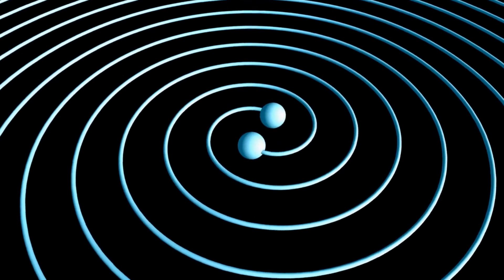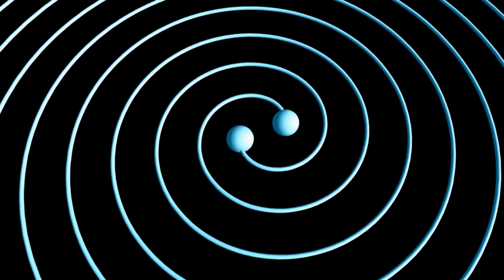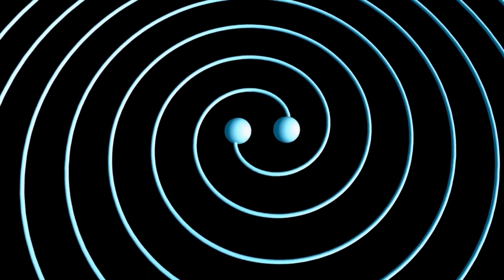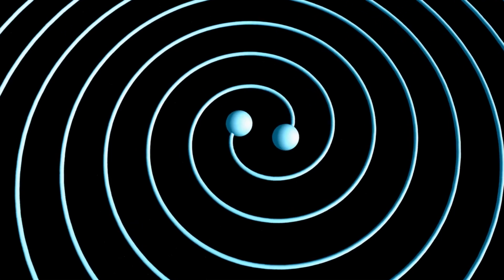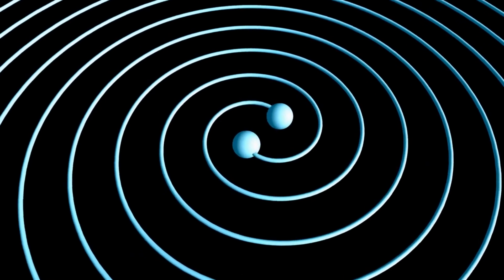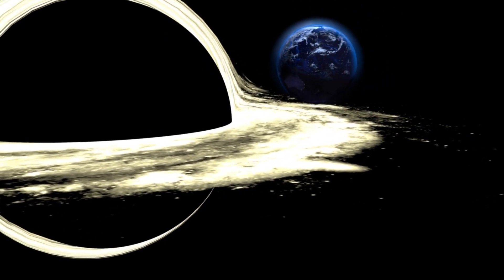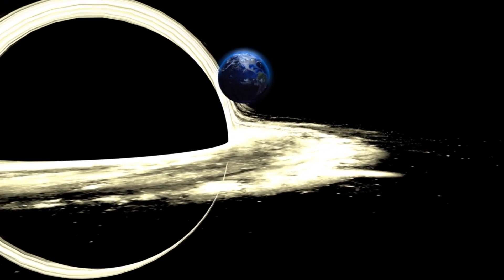On September 14, 2015, the Twin Laser Interferometer Gravitational Wave Observatory detectors, located in Louisiana and Washington in the U.S., made the first-ever direct observation of gravitational waves. This event, designated GW 150914, was the result of the collision of two black holes.